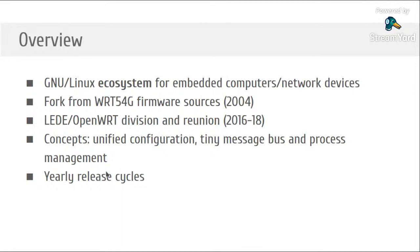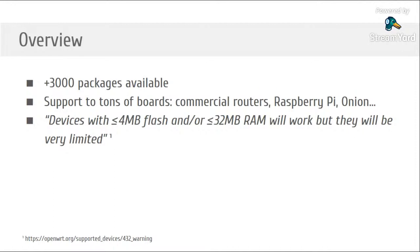About release cycles: we have a yearly-based release cycle, so you expect one release per year. There was one in 2017, one in 2018, one in 2019, and you're still expecting this year's release, which may be released in a few days. Usually releases are out between May and August of the current year.